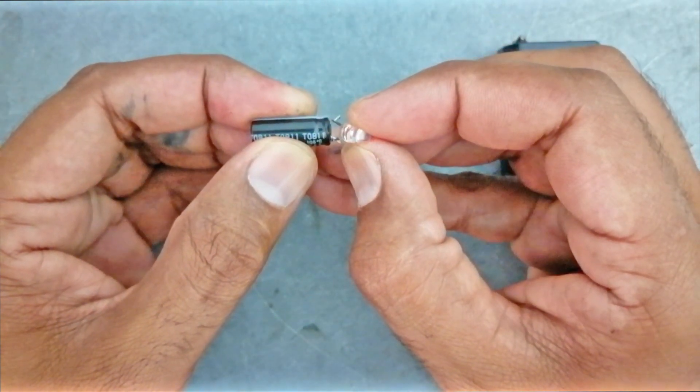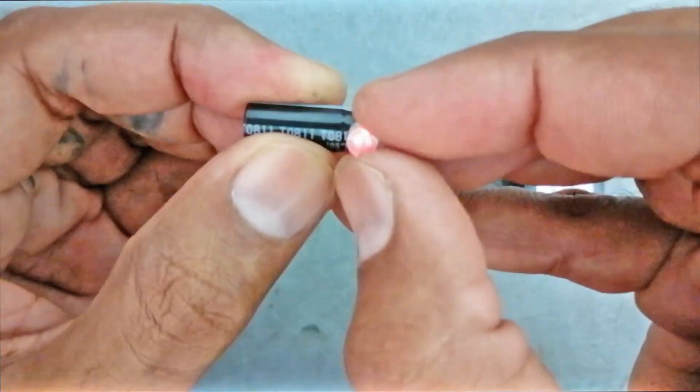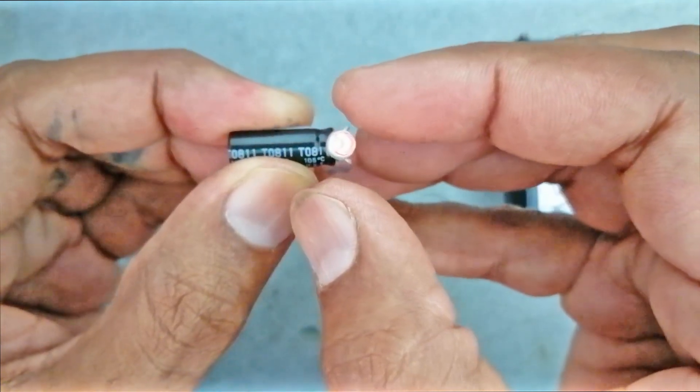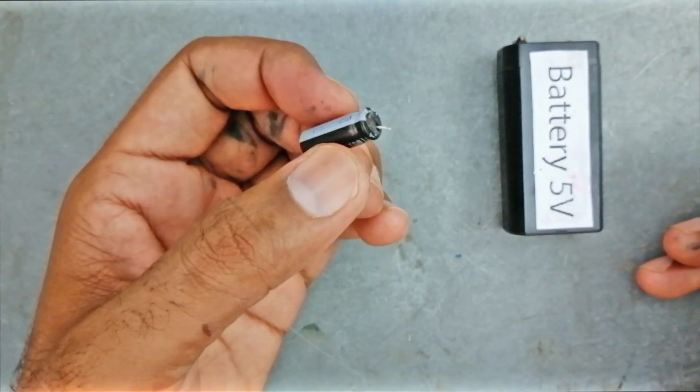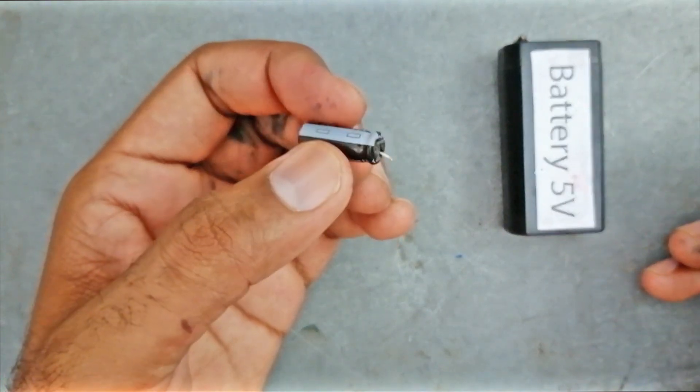Great! Our bulb flashed for a second and then has a red light. It is still turned on. Let's separate them, it turns off now. That means when we attach any capacitor with electric current, it charges and has voltage.